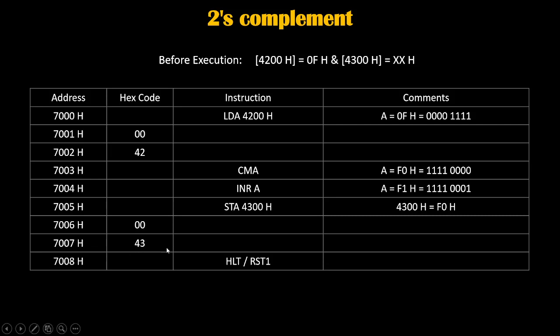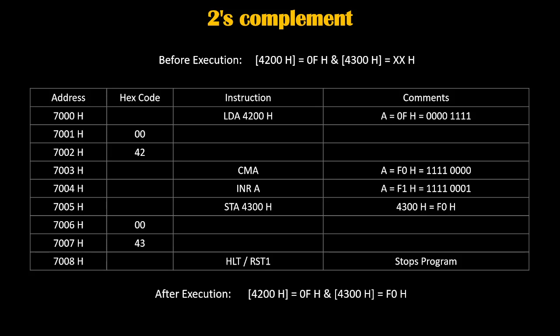Finally, at 7008h we write HLT or RST1 to stop execution of the program. After execution, the complemented value of 0fh — which is actually f1h, not f0h — will be stored at 4300h. Thank you.